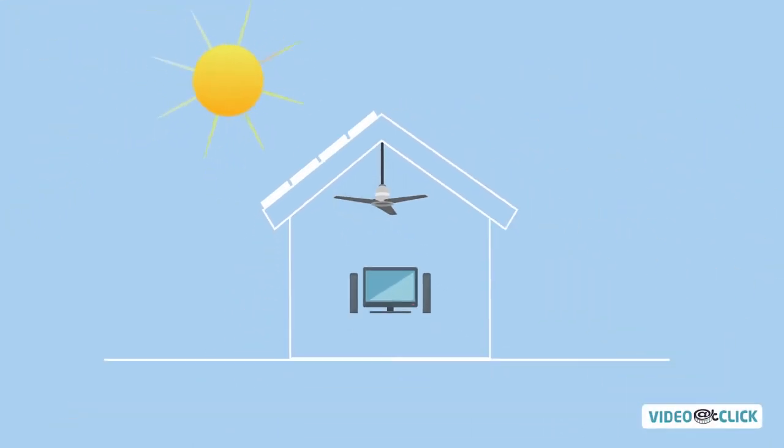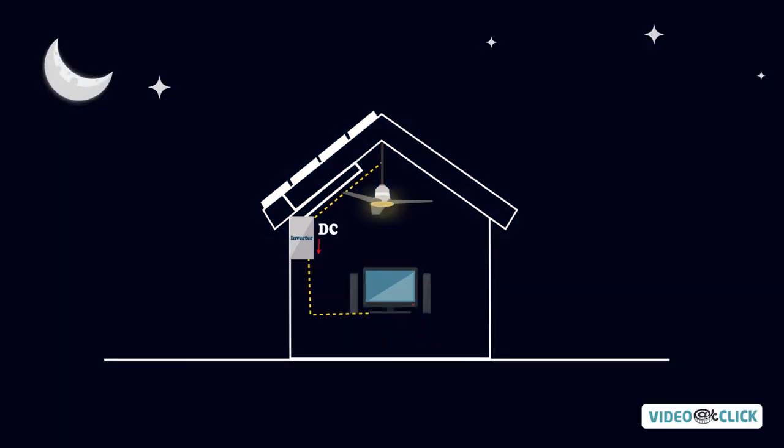Unfortunately, direct current electricity cannot power appliances in your home. To create usable electricity, solar power needs to travel to an inverter first, which converts DC electricity into alternating current or AC electricity, which home appliances can then use.